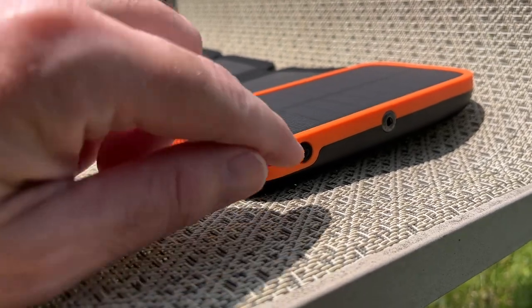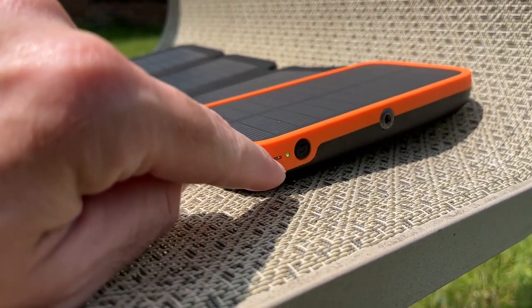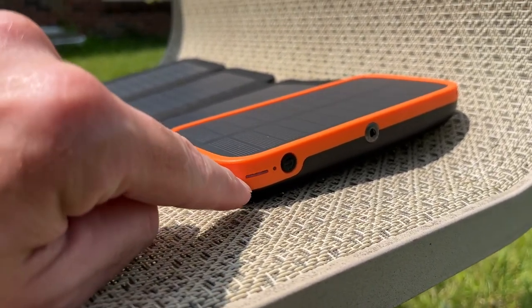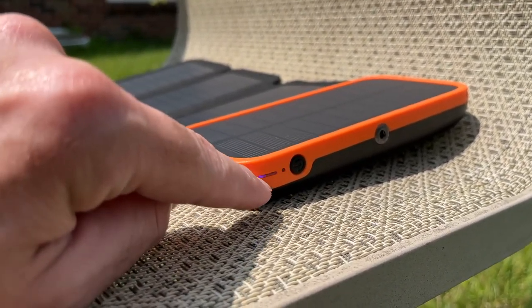You can tell if it's solar charging if this green light is lit. It's flashing in the camera, but in person it looks solid. So that's how you can tell it's solar charging. And you can also see these other indicators showing that it's charging the battery.